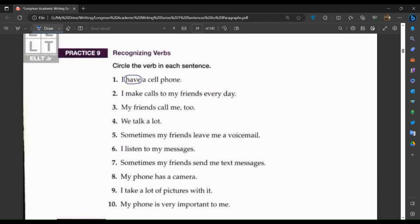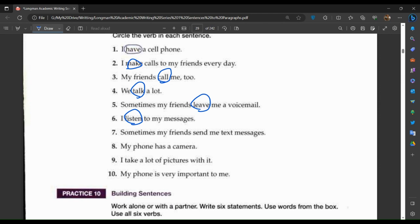Practice nine: recognize a verb. I have a cell phone. I make calls to my friends every day. My friends call me. We talk a lot. Sometimes my friends leave me a voicemail. I listen to my messages. Sometimes my friends send me text messages. My phone has a camera. I take a lot of pictures with it. My phone is very important to me.